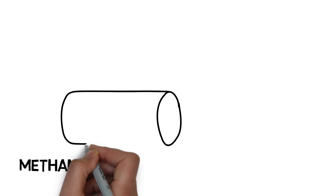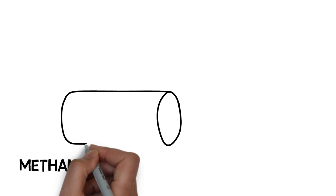Methane leaks: Some of the fossil fuel gets lost during transport, for example due to leaks in pipelines. In the case of methane, its release into the atmosphere should be avoided since it's a much more potent greenhouse gas than CO2.